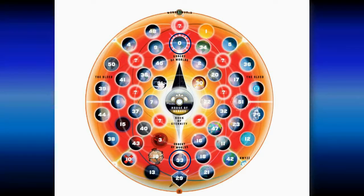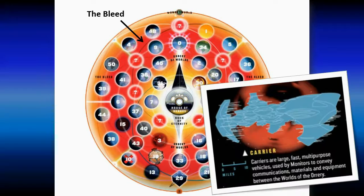The space in between these different Earths is called the Bleed, described as a hyperdimensional fluid medium that allows for transportation between realities, or for quick transportation within a single reality. The Bleed can only be navigated by the right equipment, like one of the Monitor's interdimensional carrier crafts.